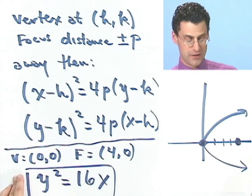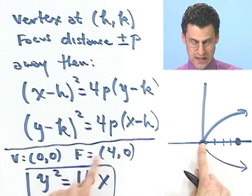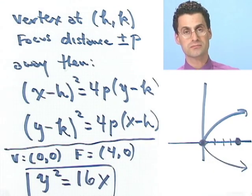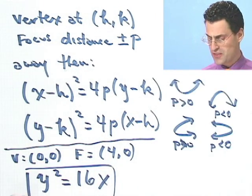So 4 times 4 would be 16x. So in fact, that's the equation of the parabola that has vertex at (0,0) and focus at (4,0). Neat and pretty easy, too. Let's try another one together.